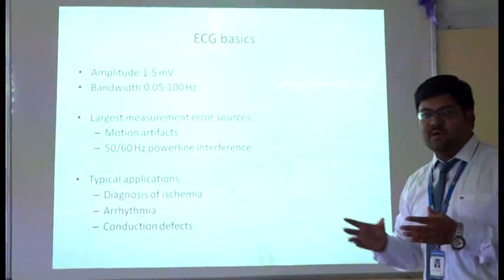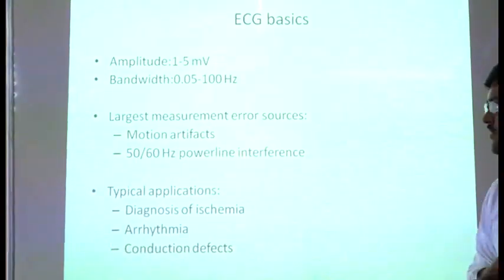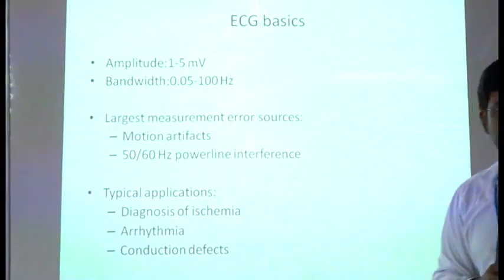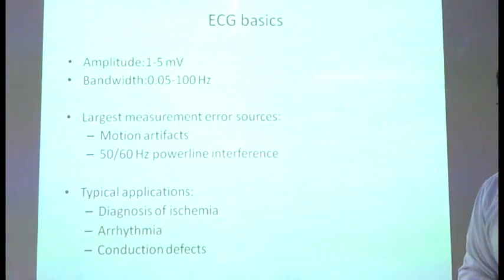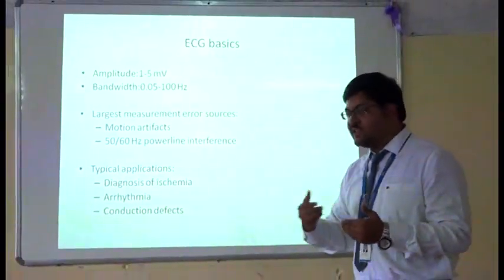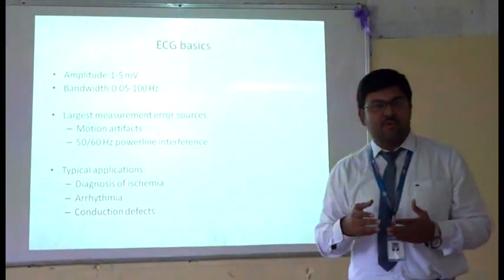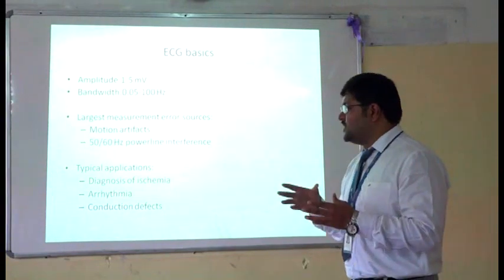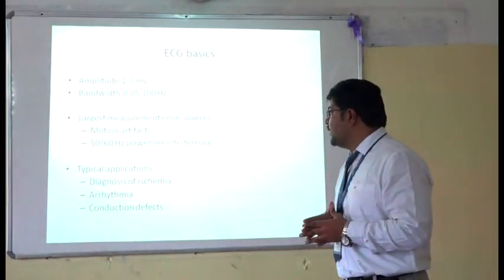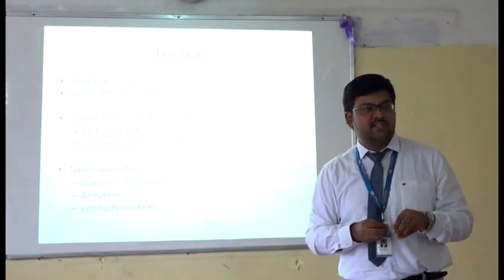A typical normal ECG signal has an amplitude between 1 and 5 millivolts (10 to the power of minus 3), so the voltage is very low. When we want to process the ECG signal, we have to amplify it using an amplifier. The bandwidth of the ECG signal is in the range of 0.05 to 100 Hz.